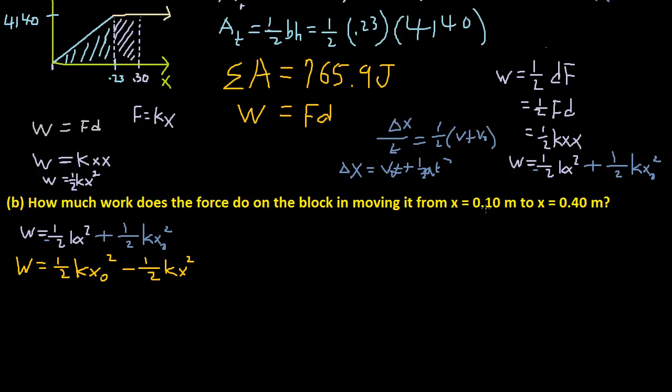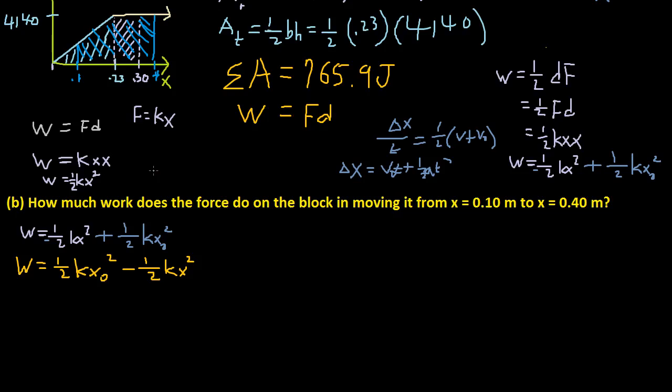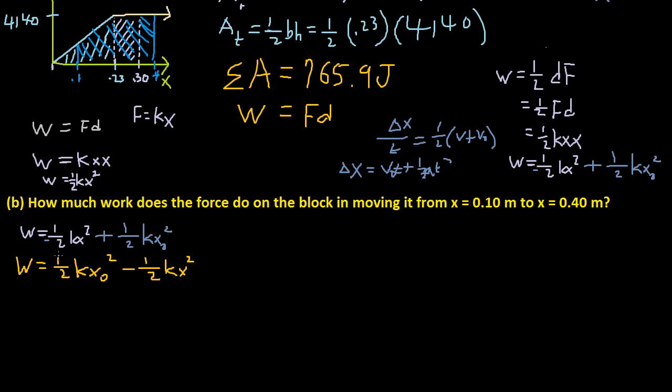So when we look at this, it's from 0.1 to 0.4. So this one is saying it's from 0.1 to 0.4. So it's asking for this whole area right here. Well, how do we calculate this area? Well, we have this equation right here, right?